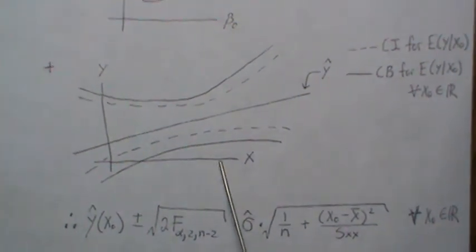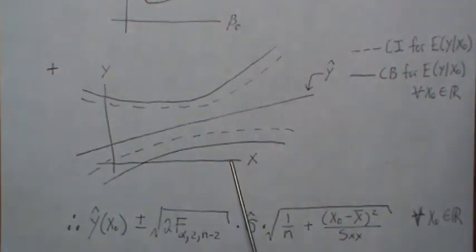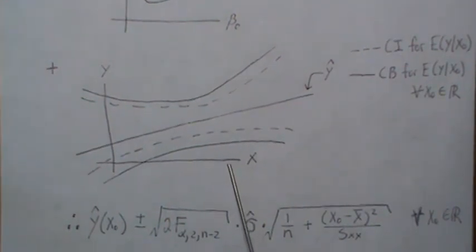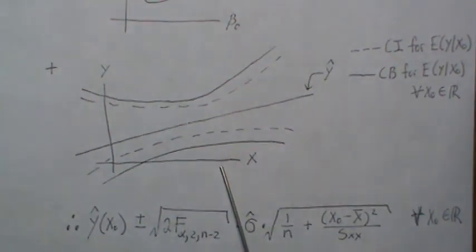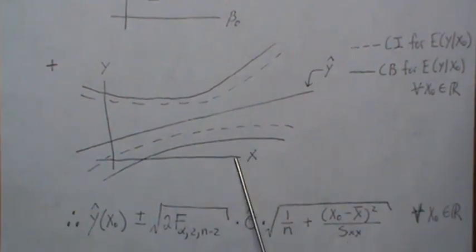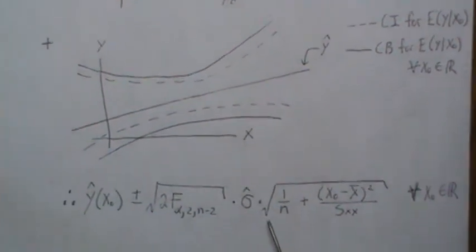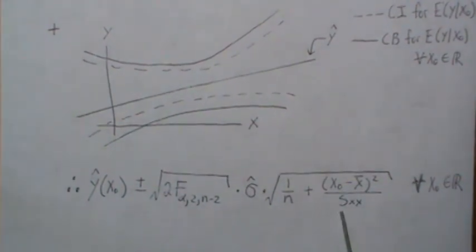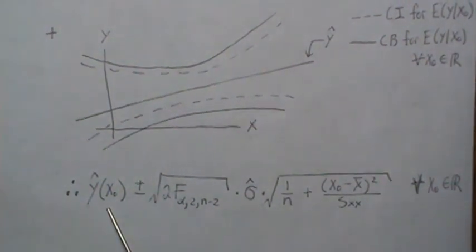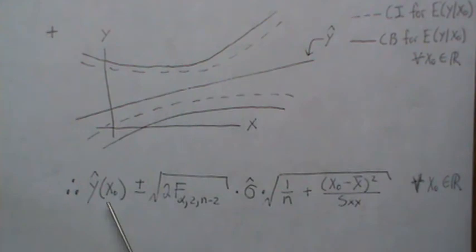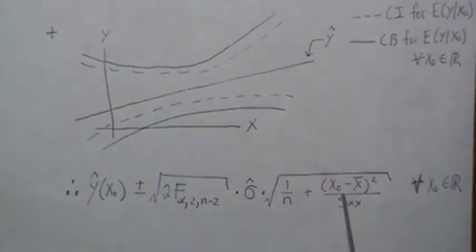And then what that does is it protects the experiment-wise alpha rate or experiment-wise error rate for as many x's as you want to pick, which is kind of crazy in itself. That's the power of the Working-Hoteling adjustment. This is the confidence interval for the average y for a given x, and this is for all x's that you want to pick that protects the experiment-wise error rate.